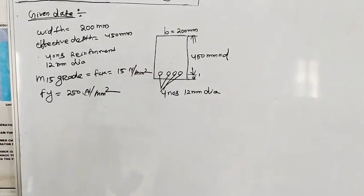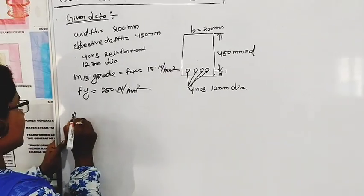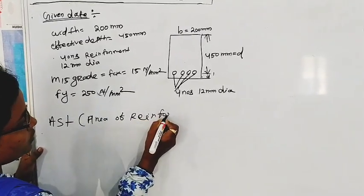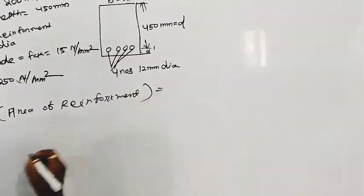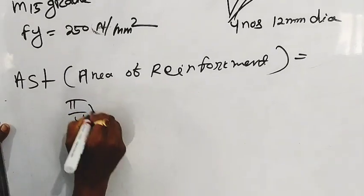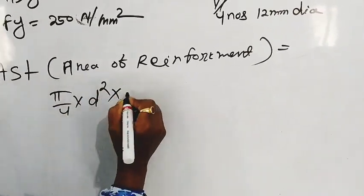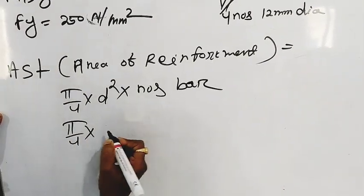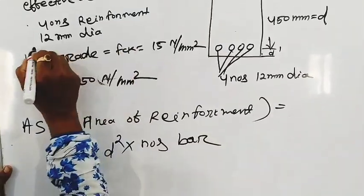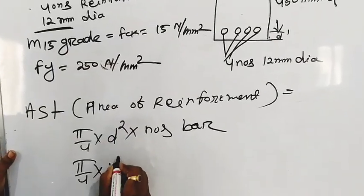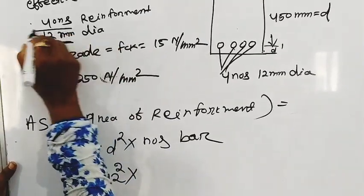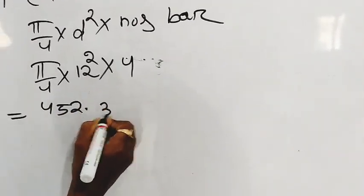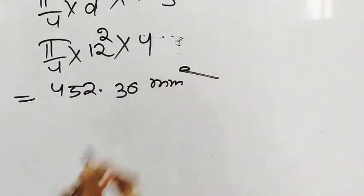FCK, area of reinforcement AST. This formula is pi by 4 into D square into number of bars. Pi by 4 into D square into number of bars. AST equals 452.36 mm square.